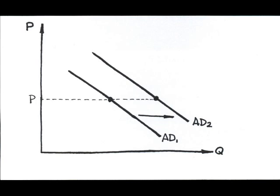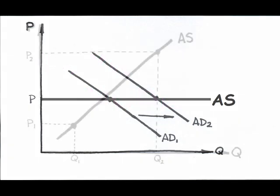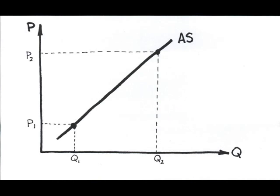The Keynesian model of aggregate supply is horizontal. Of course, for the most part, we see that increased GDP is accompanied by some inflation. This is the intermediate model of aggregate supply.